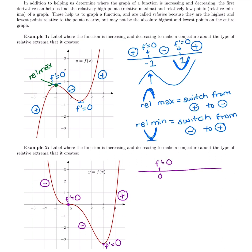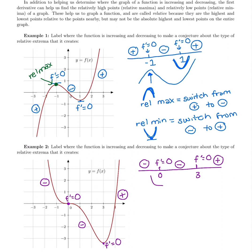The next point is x equals three, which also makes the derivative zero. That's step one: find where the derivative is zero, then test values before and after to see whether the first derivative is positive or negative. At first this one has a negative first derivative. Before and after x equals zero, the derivative is negative. Then after x equals three, we finally have a positive derivative. So at x equals zero, we go from negative to zero to negative — no sign change means no extrema.